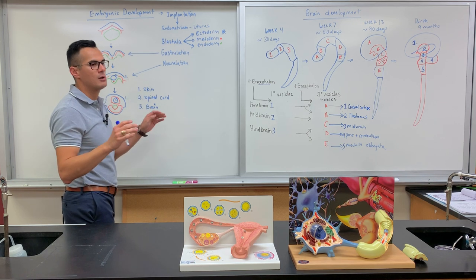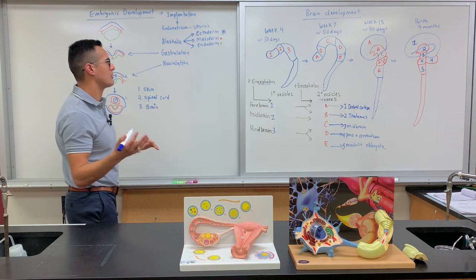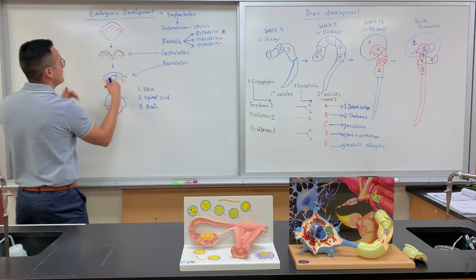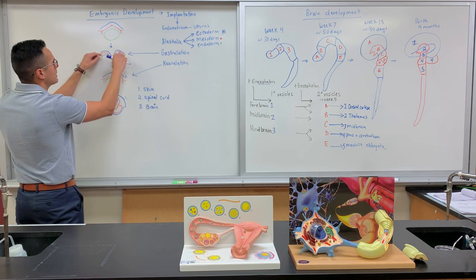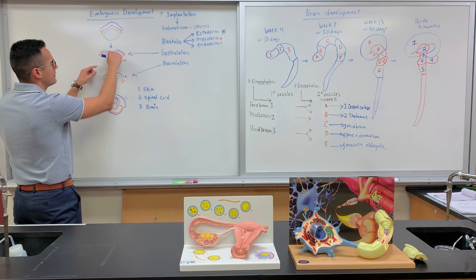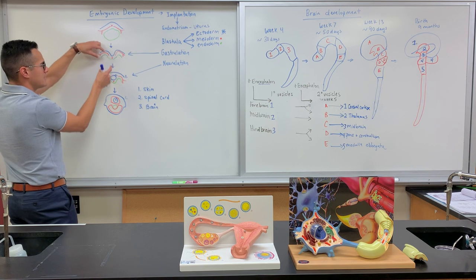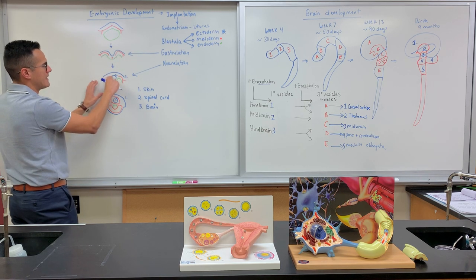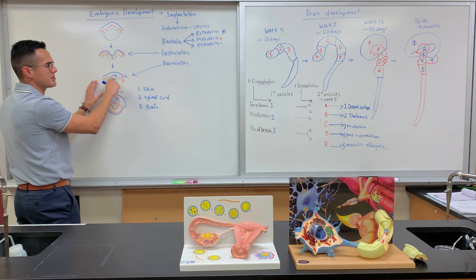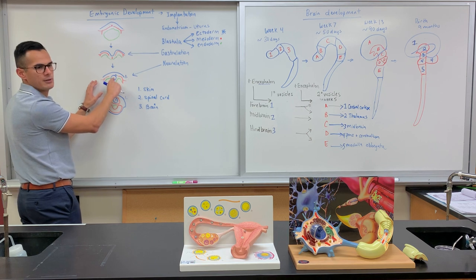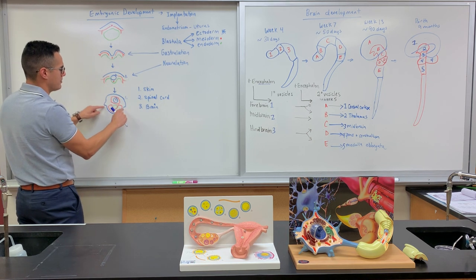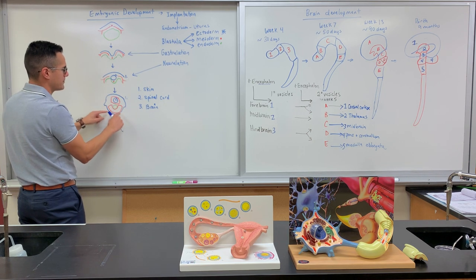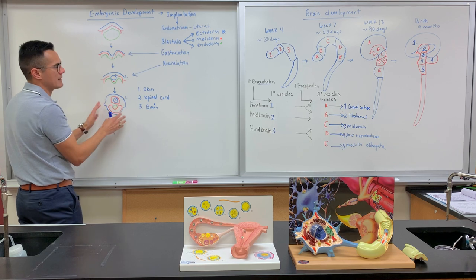I want to show you where the brain and the spinal cord come from. Through the folding of the ectoderm, we get the formation of what's called the neural plate, and then the neural groove. It folds on itself, and that's how you get the formation of the spinal cord. And this part ends up becoming the skin on the outside.